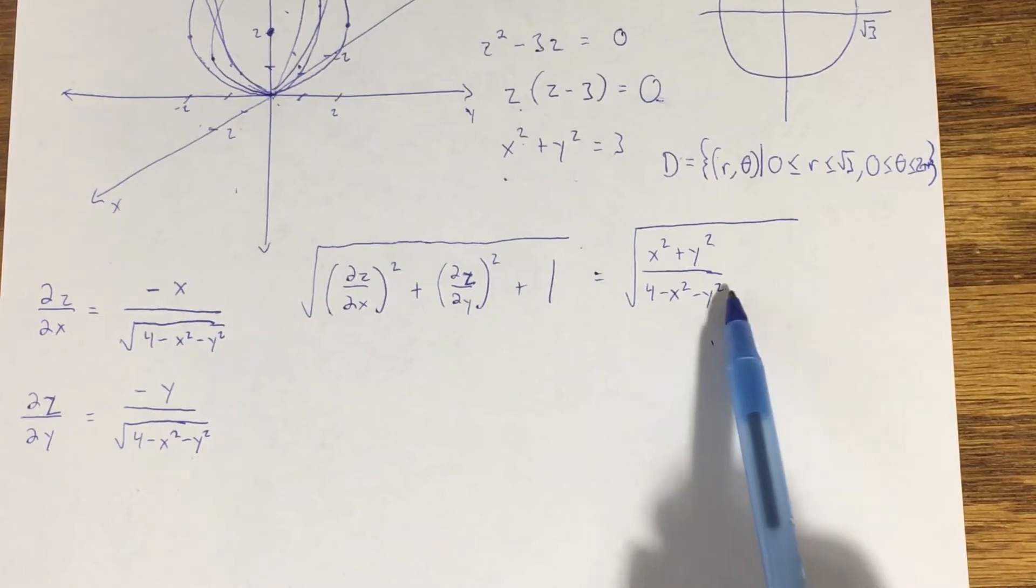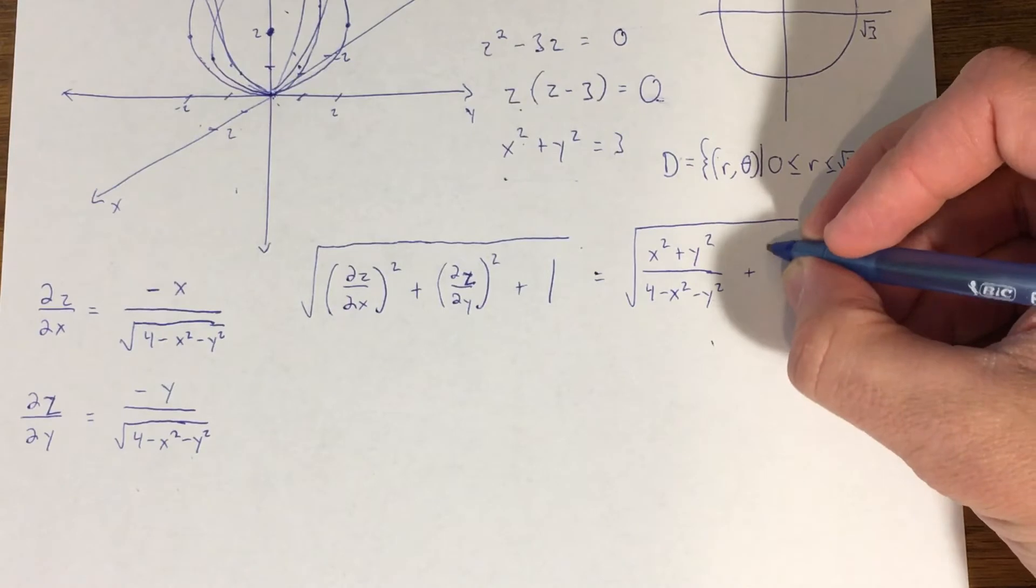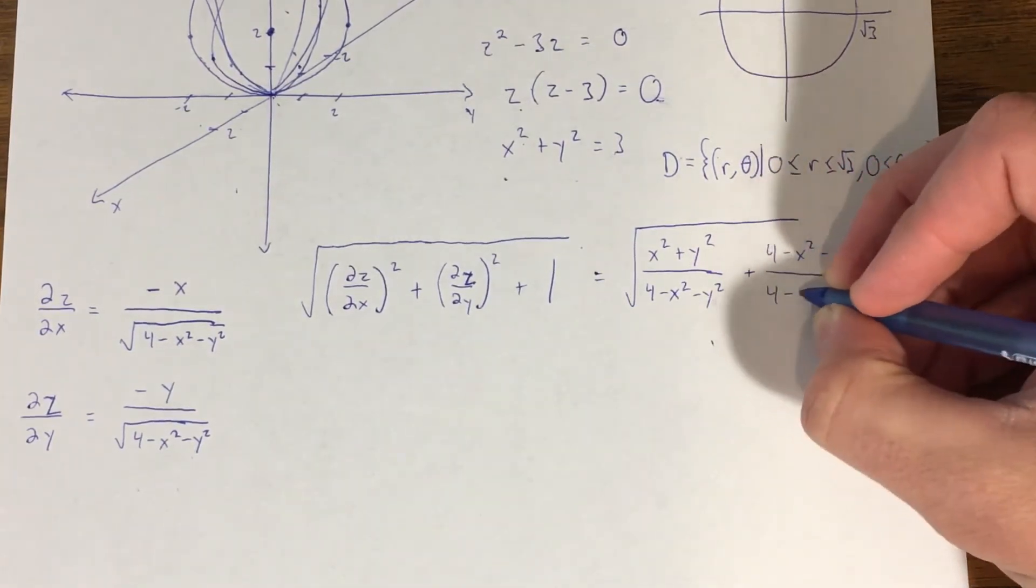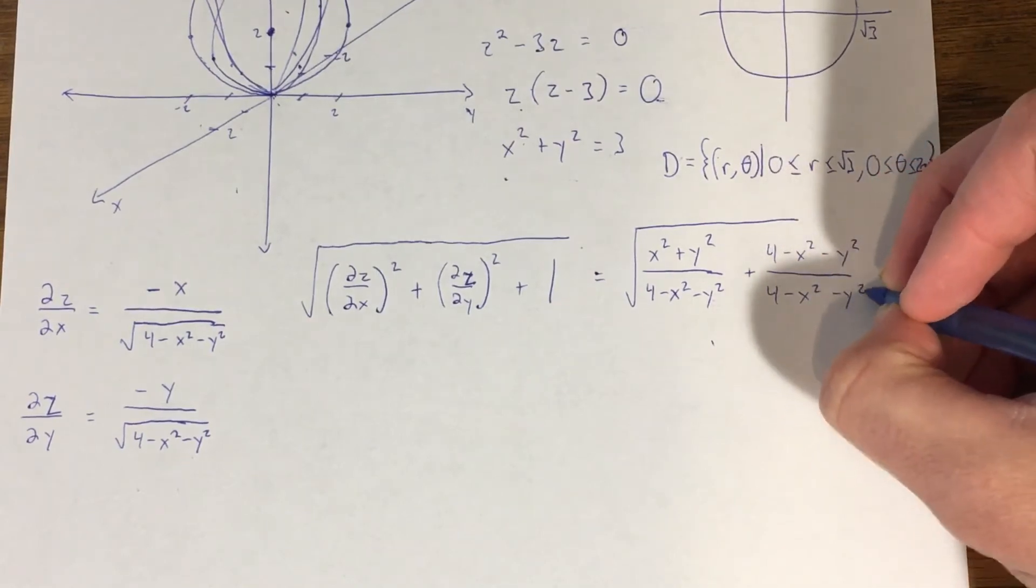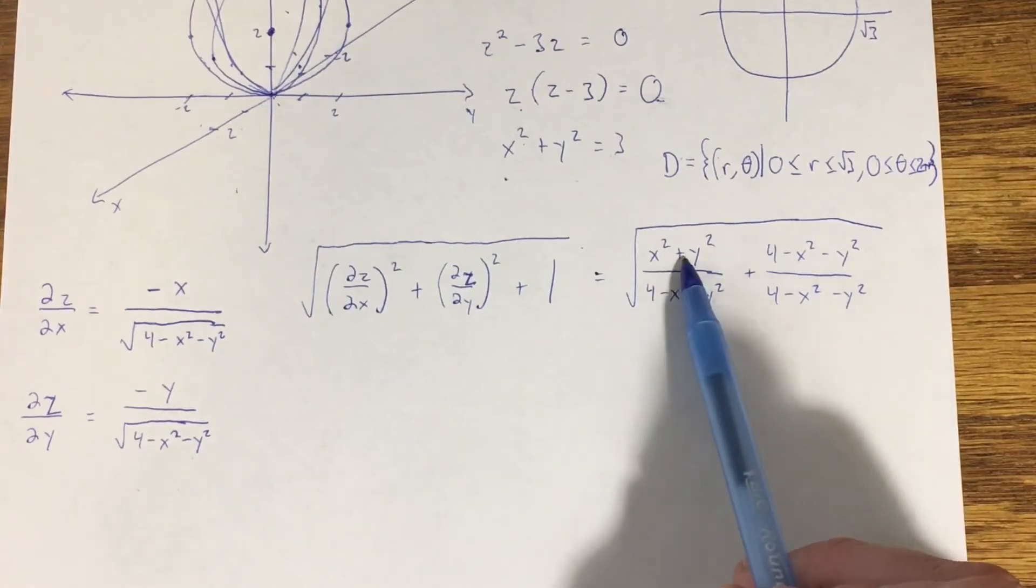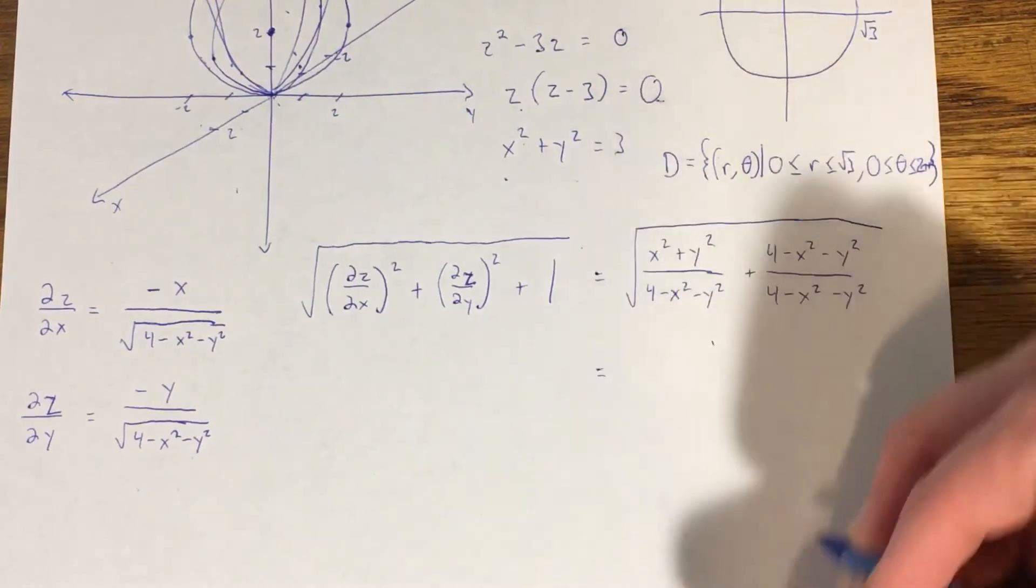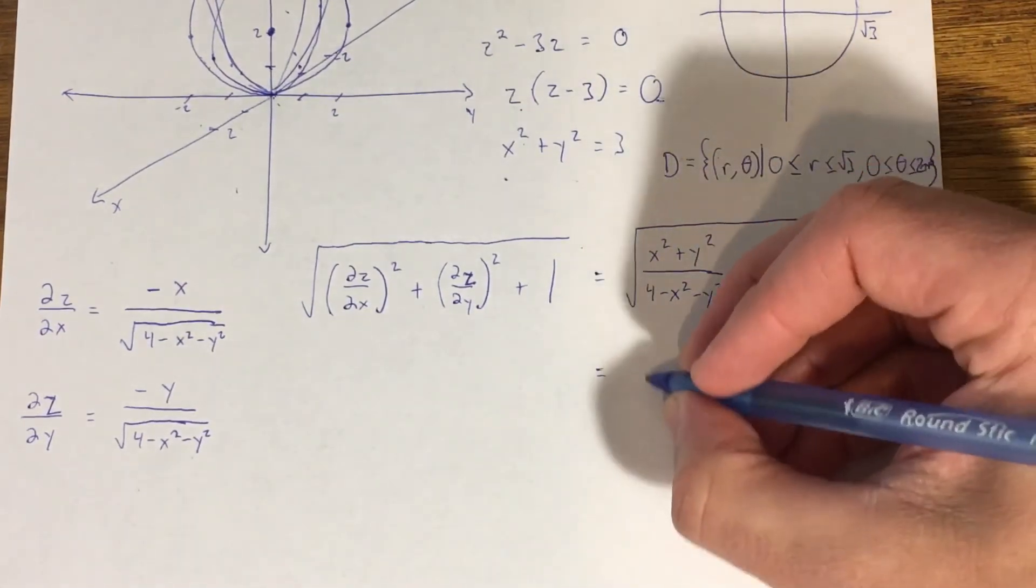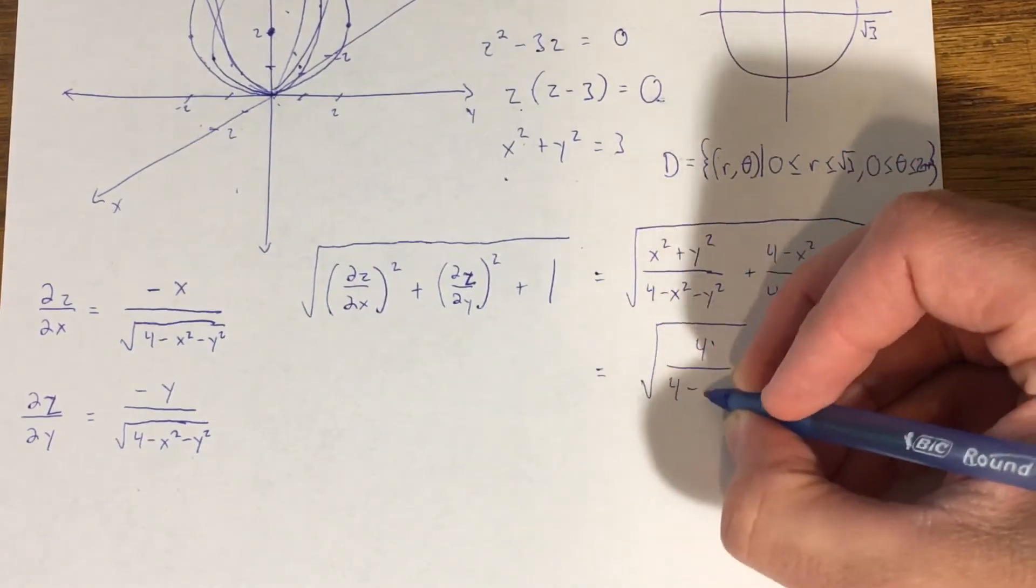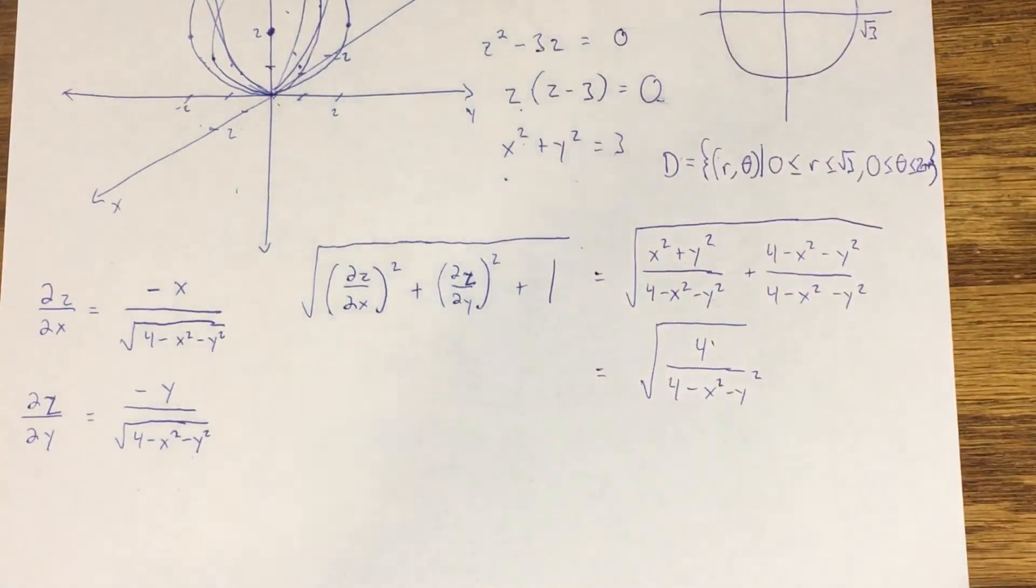I have a plus one here, but what I want to do is get a common denominator so I can group everything into one rational expression. I'm going to write my 1 as four minus x squared minus y squared over four minus x squared minus y squared. Something really convenient happens here—the x squared and the y squared in the numerator cancels with these two, just giving me the 4. I'm going to be left with the square root of 4 over four minus x squared minus y squared.